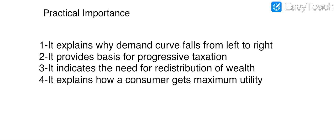Next is the practical importance of the law. Number one, it explains why the demand curve falls from left to right — why the demand curve has a negative slope. As price falls, quantity increases. In terms of marginal utility, when we increase a unit, marginal utility decreases, so we are not going to purchase an additional unit of that commodity unless we have a use for it.